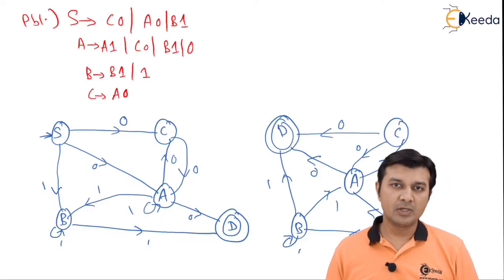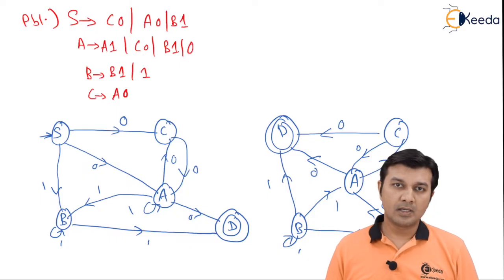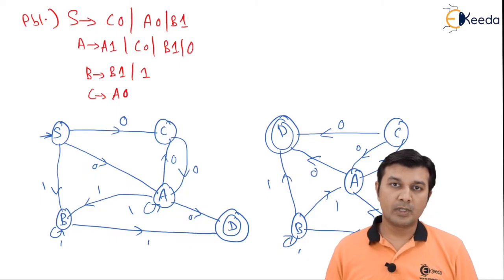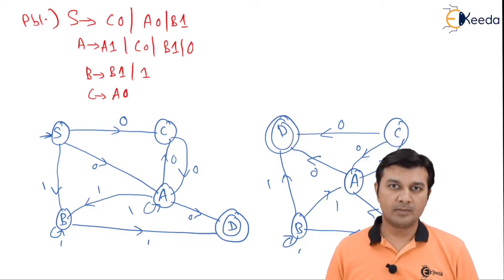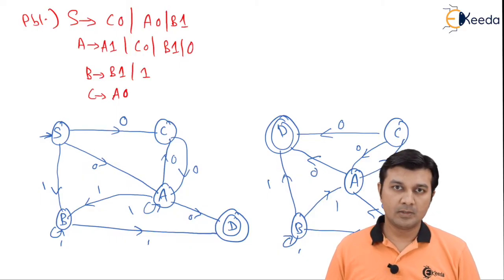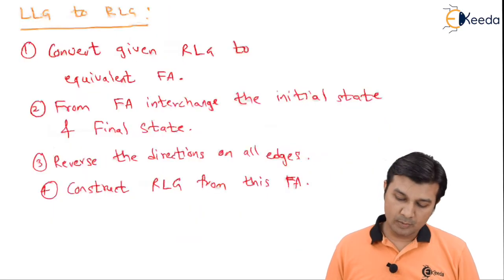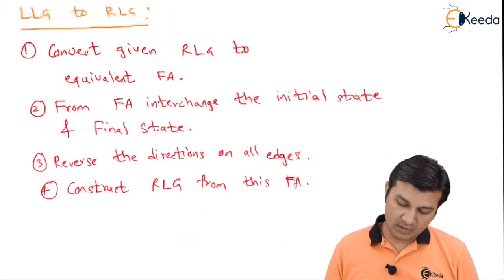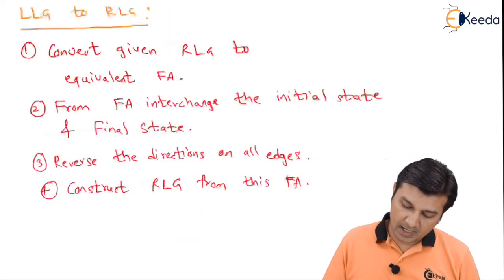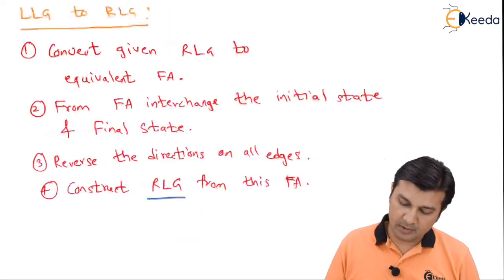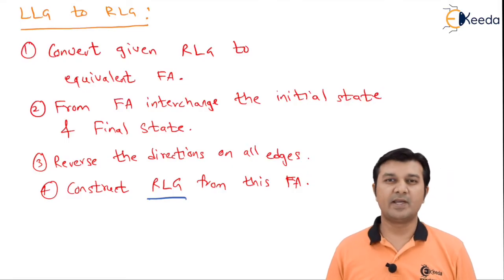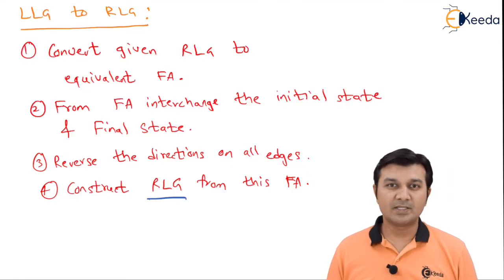After this we can write the grammar converted into the equivalent form. Step number 4 says: construct the right linear grammar from this finite automata. Let us do it as the final step.